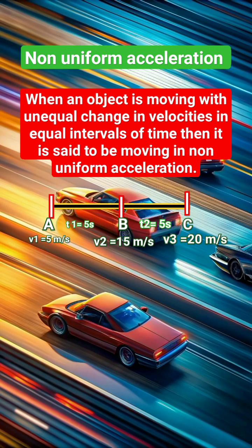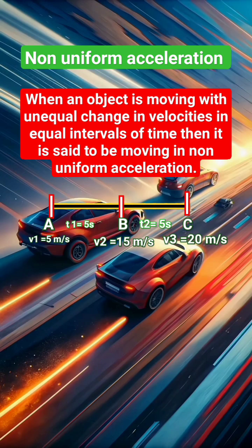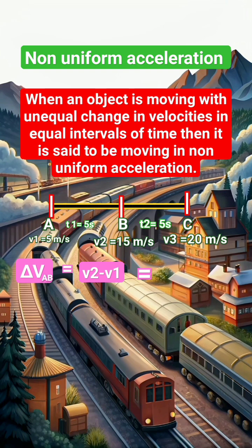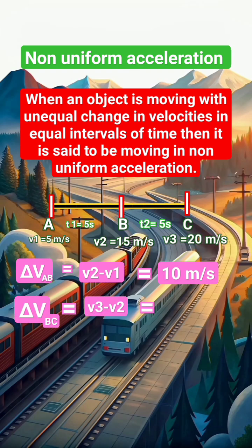Let's take an example. An object is moving from A to B and then B to C. At A its velocity is 5 meters per second. At B it is 15 meters per second. At C it is 20 meters per second.